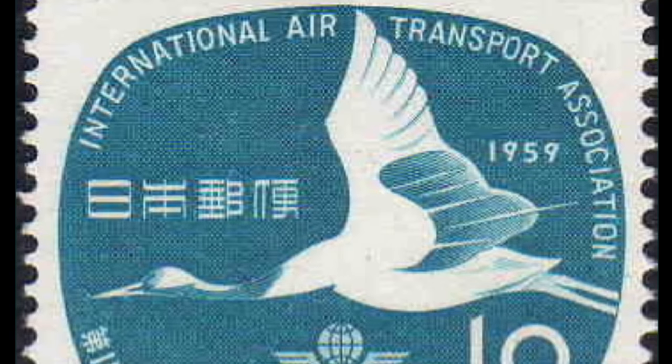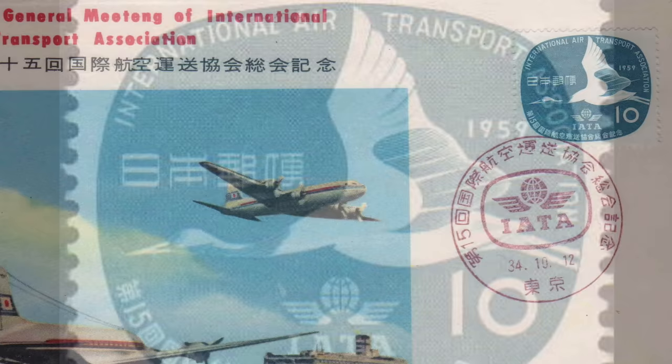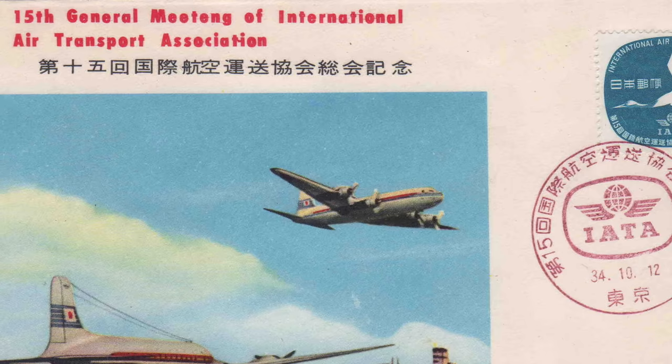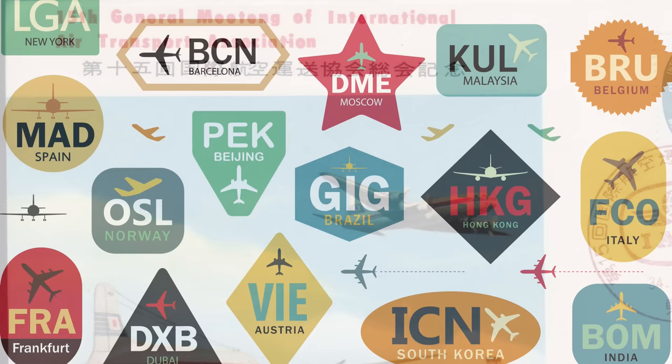Over time the IATA grew, and the modern organization — the International Air Transport Association — was created in April 1945. At its founding, IATA consisted of 57 airlines from 31 countries. Today the IATA is headquartered in Montreal and consists of 300 airlines, primarily major carriers, representing 117 countries.